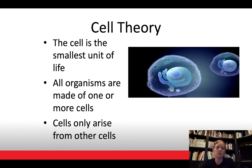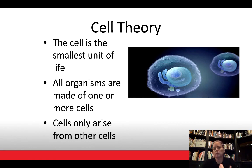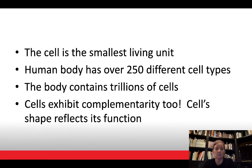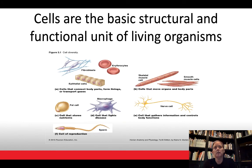A brief reminder of cell theory: the cell is the smallest unit of life, all organisms are made up of one or more cells, and cells can only arise from other cells. Our human body has trillions and trillions of cells — over 250 different cell types. Cells also exhibit complementarity, meaning structure and function are intimately related.